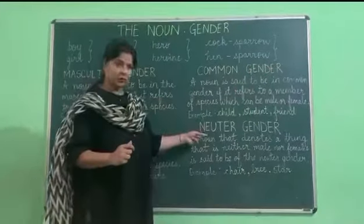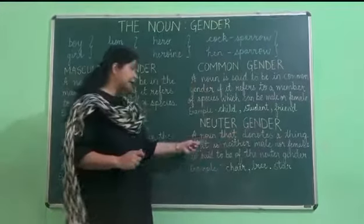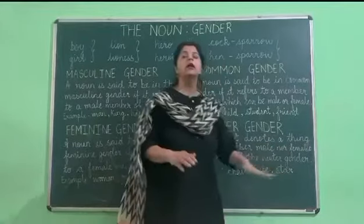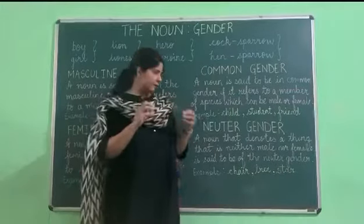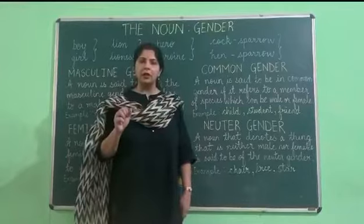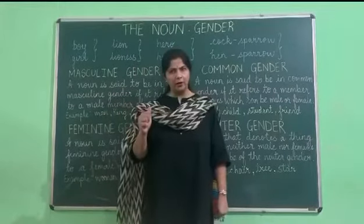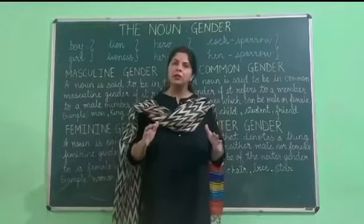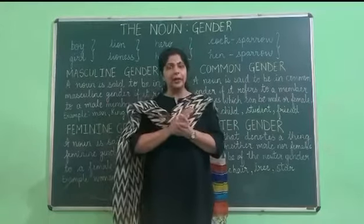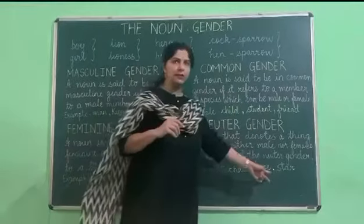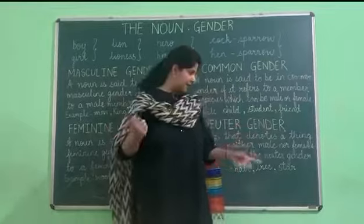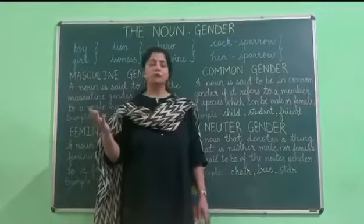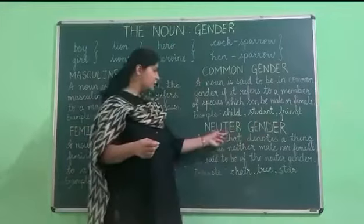The last one is the neuter gender. A noun that denotes a thing that is neither male nor female is said to be of the neuter gender. There is no male or female gender being discussed here. For example, a chair — you cannot tell whether a chair is a boy or a girl. It is a neuter gender; it neither belongs to the male category nor the female category. Trees, stars, mountains, rivers — you cannot tell which gender they belong to because they belong to the neuter gender.